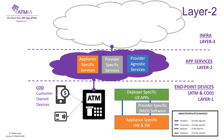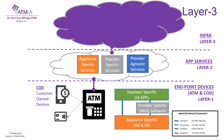The infra layer 3 is designed to leverage on cloud based technologies and open API models. There are provider agnostic services in blue, like the payment network gateways to the international schemes.